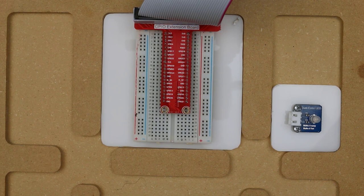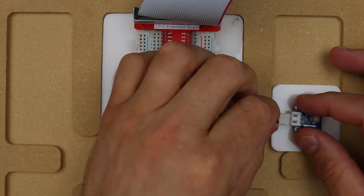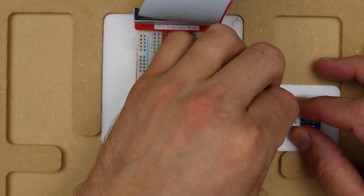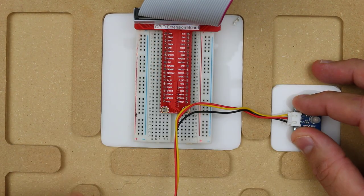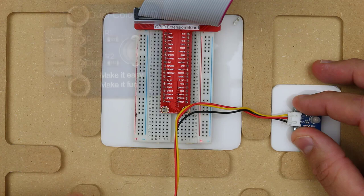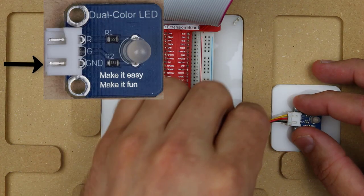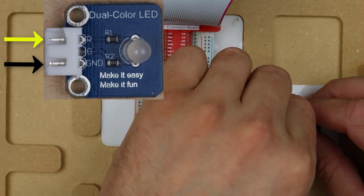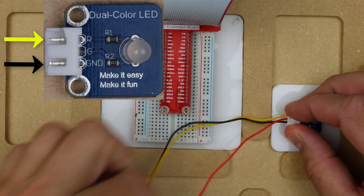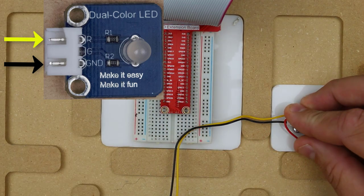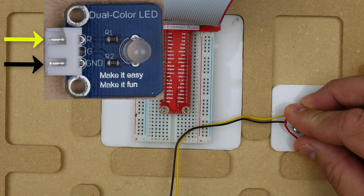We now need to connect the dual color LED to the GPIO extension board. The connector just slides in place. It goes in only in one direction. The only wires that we want to worry about for now are the black wire and the yellow wire. The black wire goes to the ground pin of the LED, and the yellow wire goes to the R pin of the dual color LED.